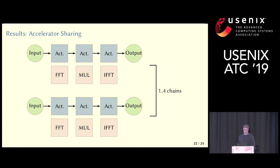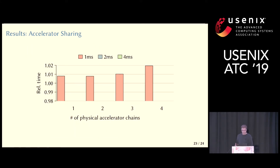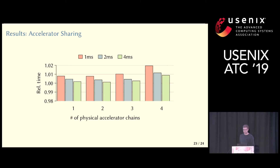Now that we can context switch and share accelerators between multiple applications, let's return to the image processing example. We have one to four chains, and we want to share them by running two virtual chains on each physical chain and switching between them. The overhead depends on the number of accelerator chains and the time slice frequency. With context switching once per millisecond, we see one to two percent overhead. With larger time slices, it is below one percent even with four accelerator chains — meaning twelve accelerators to context switch.